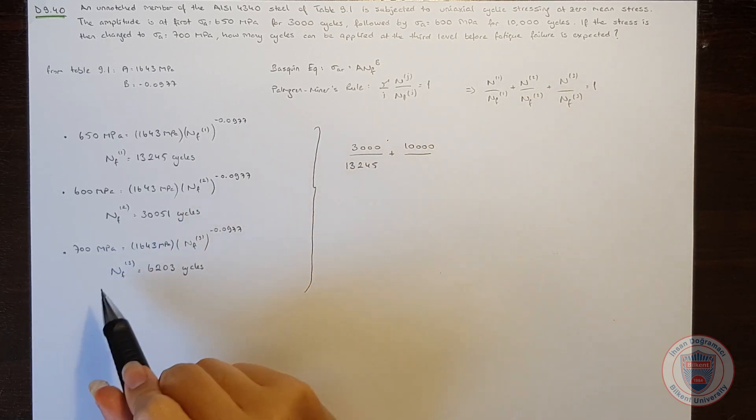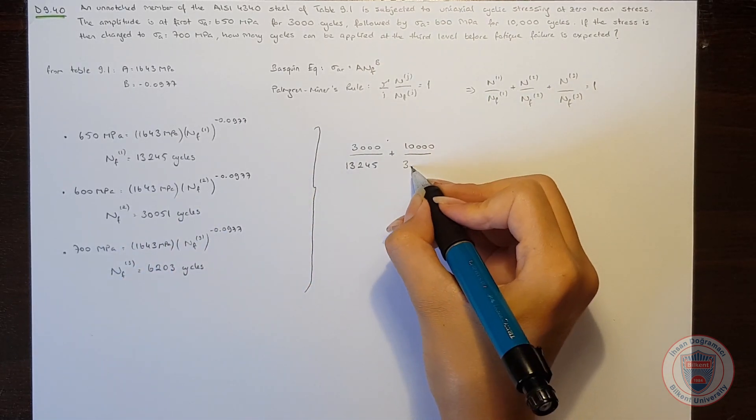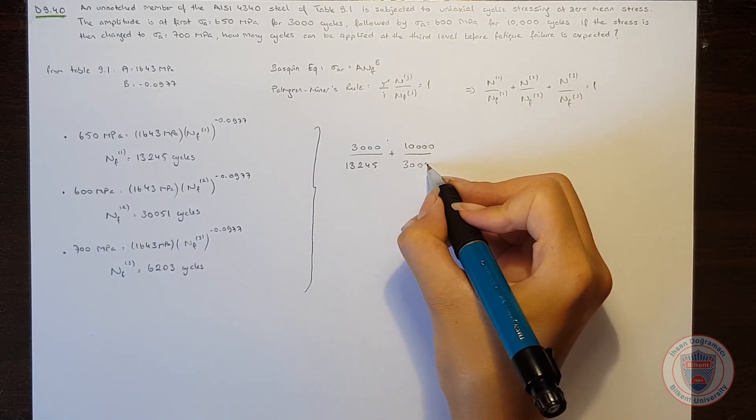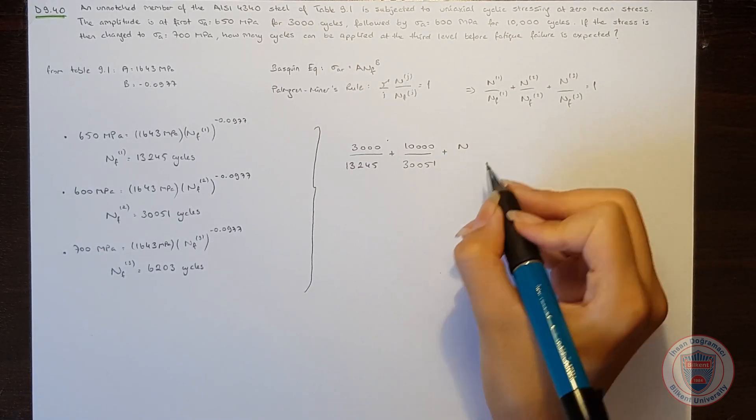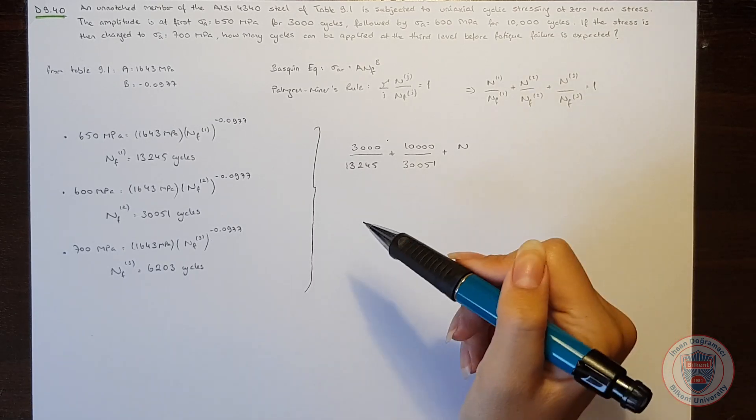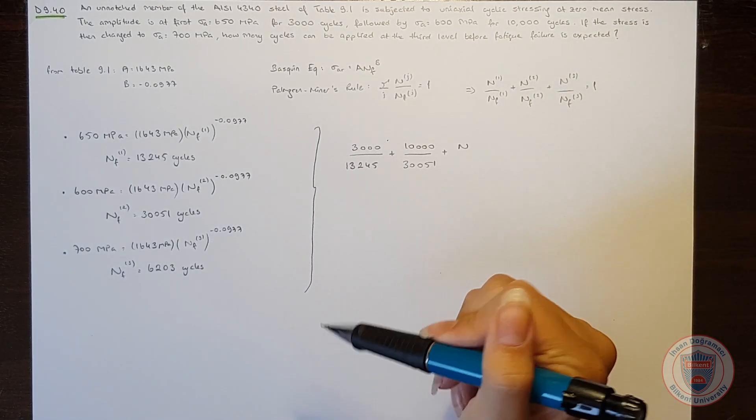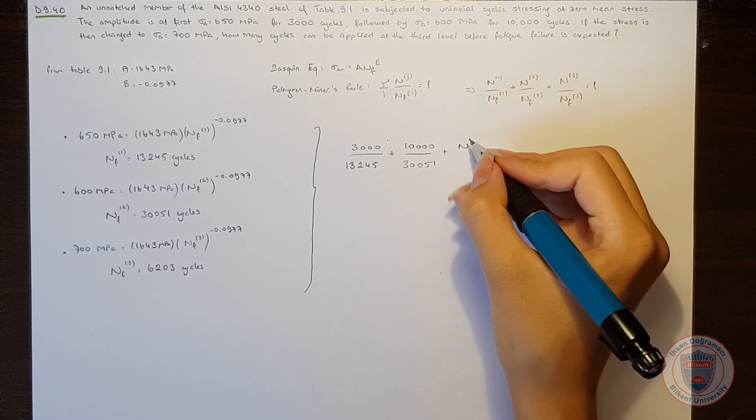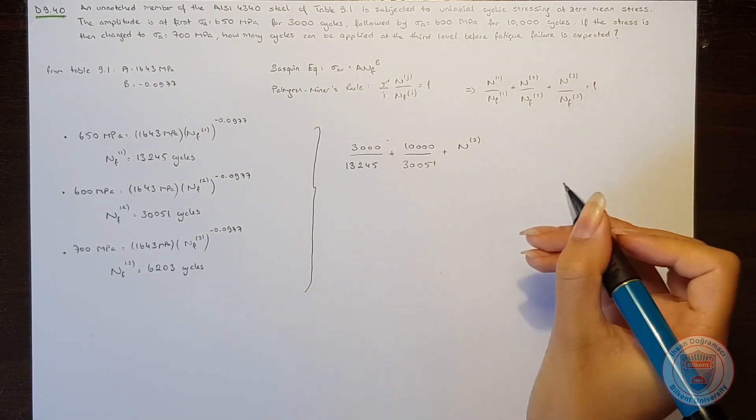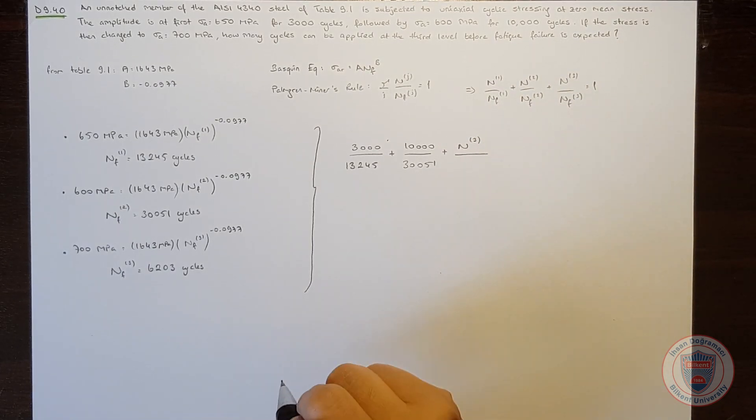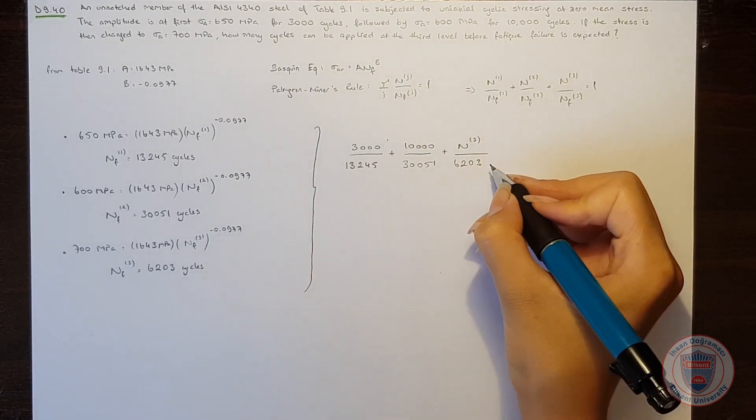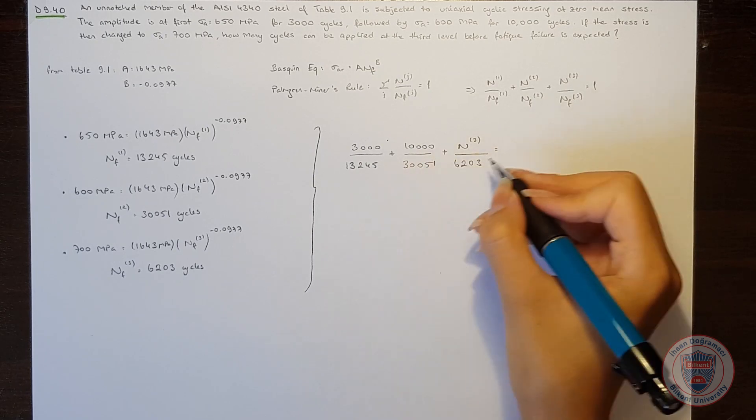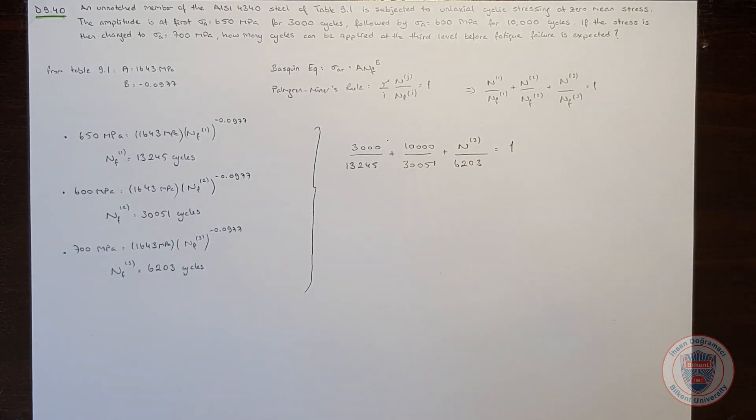and it will be over nf2, which is 30,051, plus we don't know for how many cycles the stress was applied in the third level. So I will just write n3, and it will be over nf3, which is 6203. And the sum of these ratios will be equal to 1.